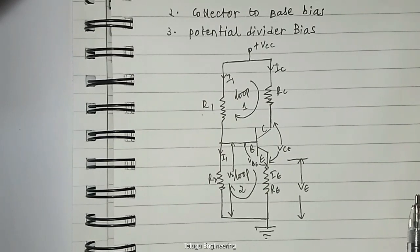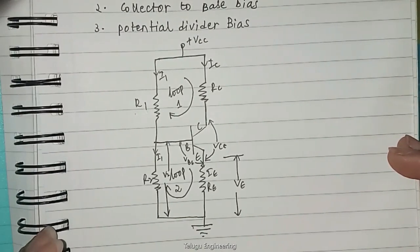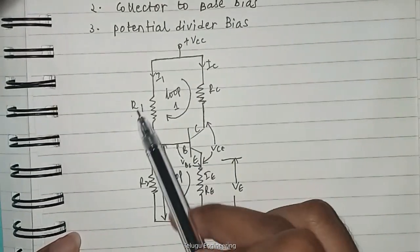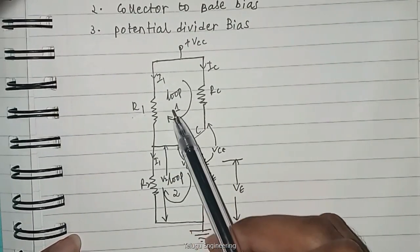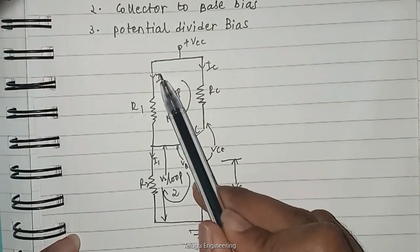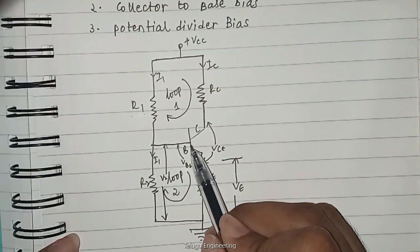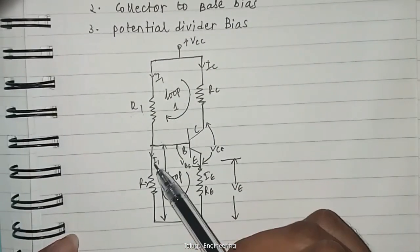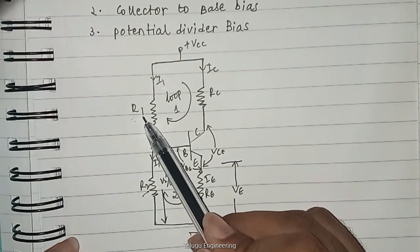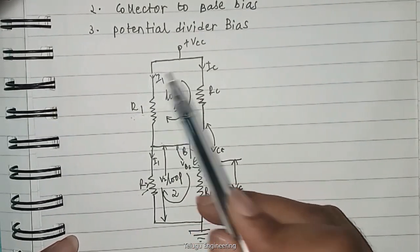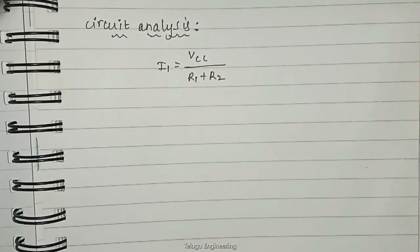Now let's go into the circuit analysis. Here we have the current flowing through the resistance R1 is I1. Since the current flowing through the base is very small, it can be assumed that the same current I1 flows through the resistor R2. The base current is negligible, so we consider the current passing through resistor R2 to be the same I1 passing through resistor R1.